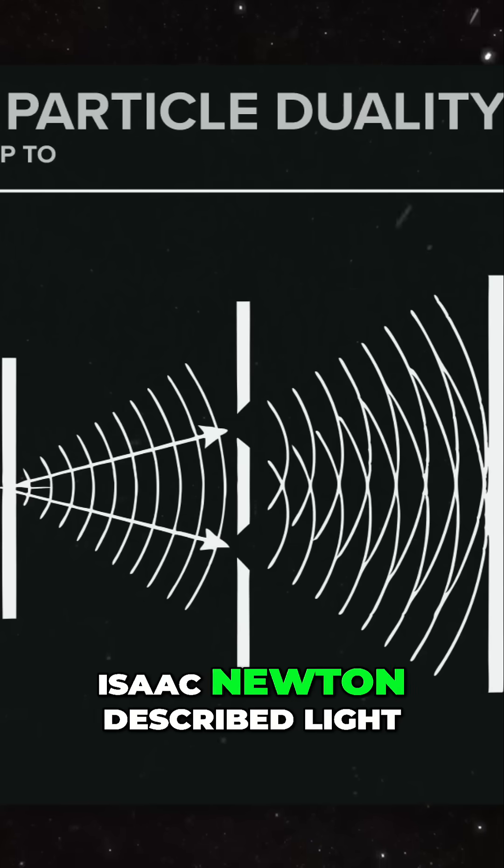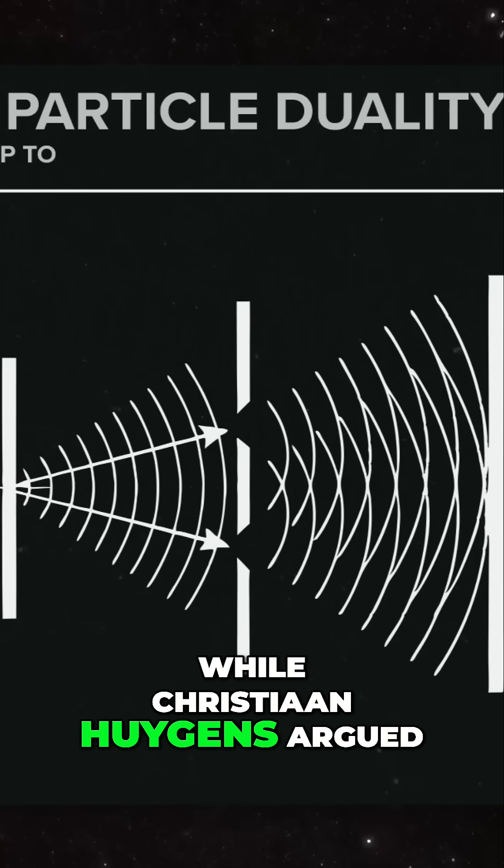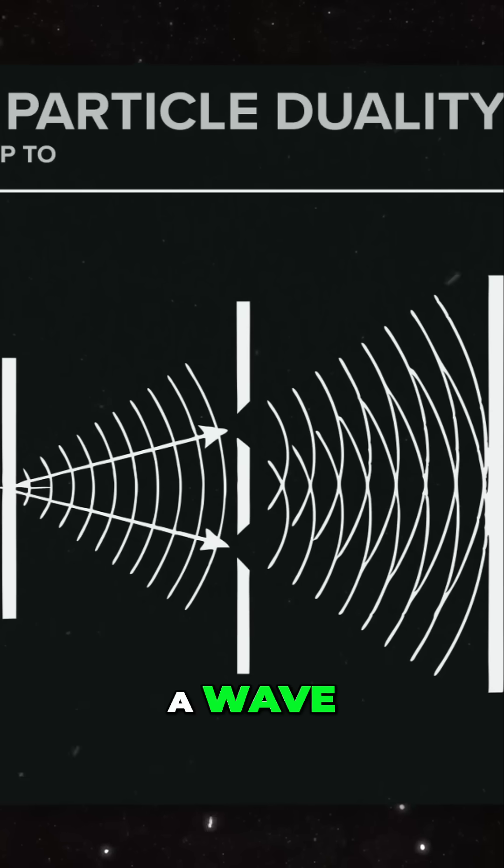In the 17th century, Isaac Newton described light as a stream of tiny particles, while Christian Huygens argued that it behaved as a wave.